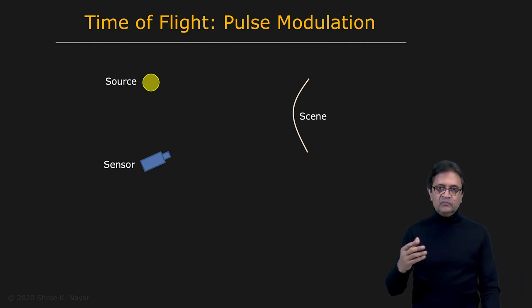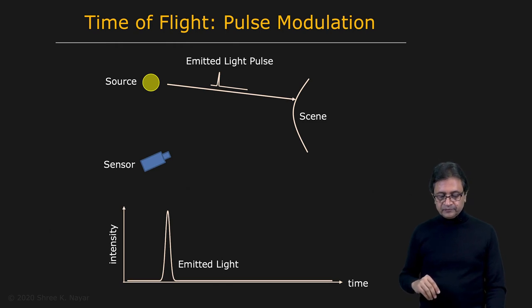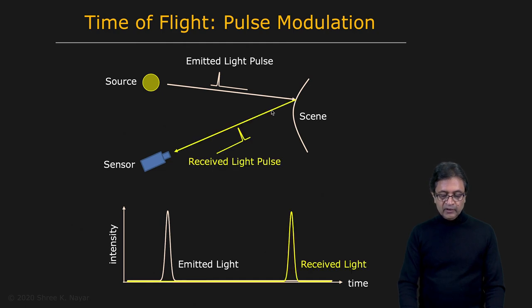The first way to do this is called pulse modulation. What you do is have the source send out a pulse of light. This is very much the way that a flash works on your camera—just one burst of light and then it goes off. The pulse then travels at the speed of light, hits the surface and then makes its way back to the sensor. Gets reflected in many directions, but we're concerned with the reflection back in the direction of the sensor. At some point, the sensor receives a pulse.